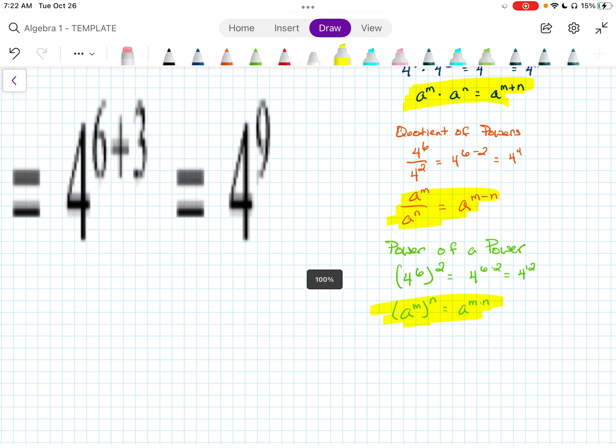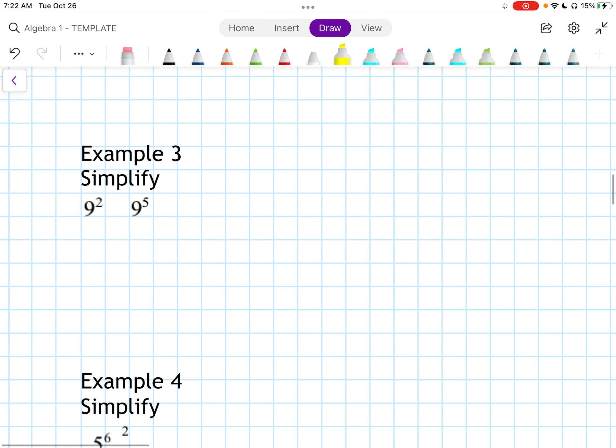Moving back, and I think we're supposed to be on example 3 now. Wherever, oh, there it is. Example 3, this is supposed to be 9 squared times 9 to the 5th.